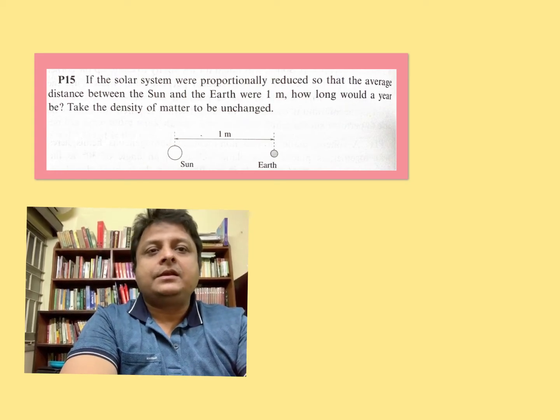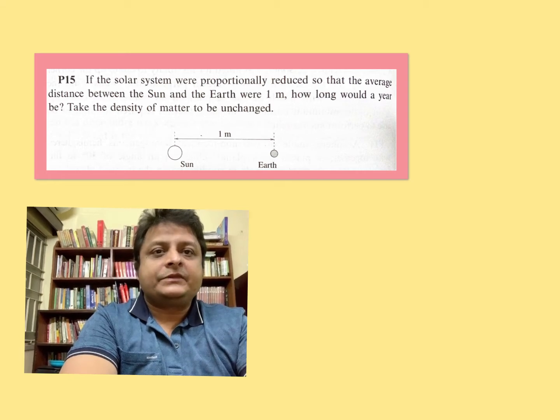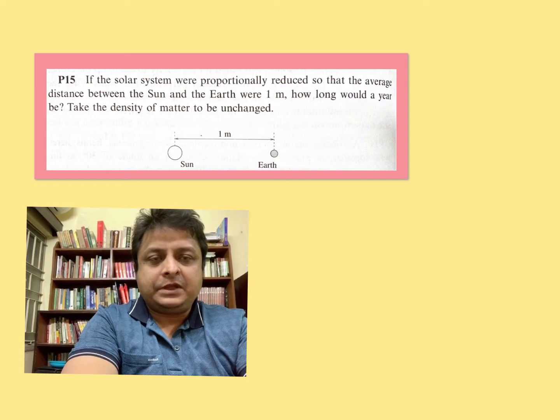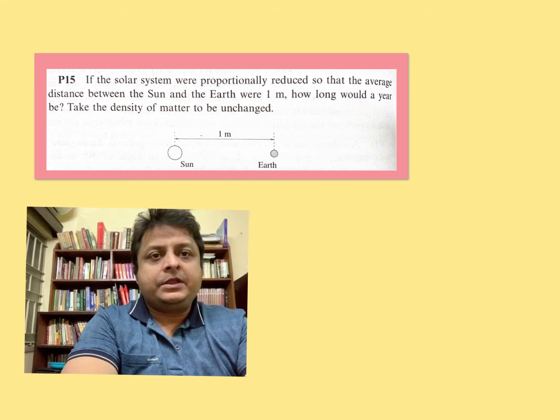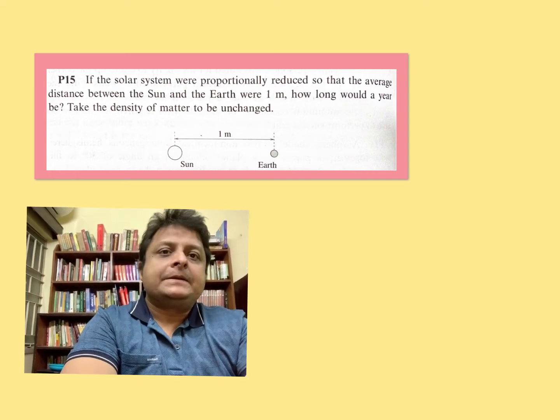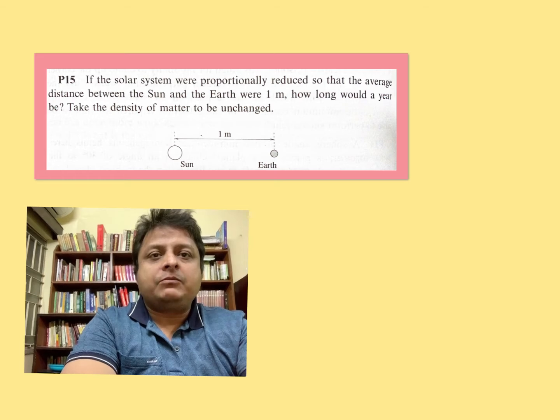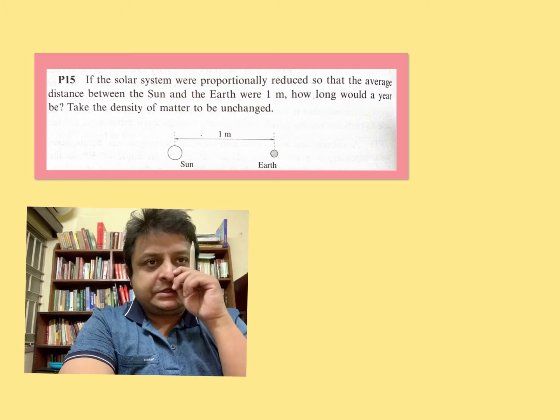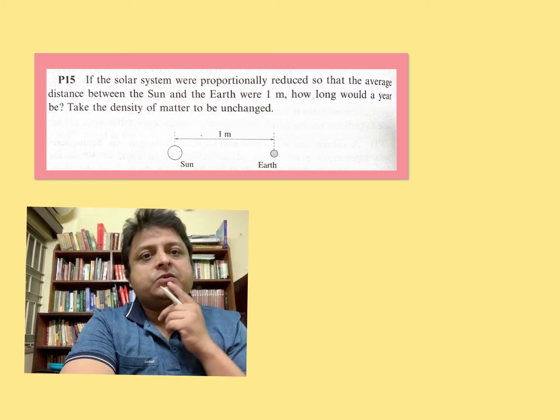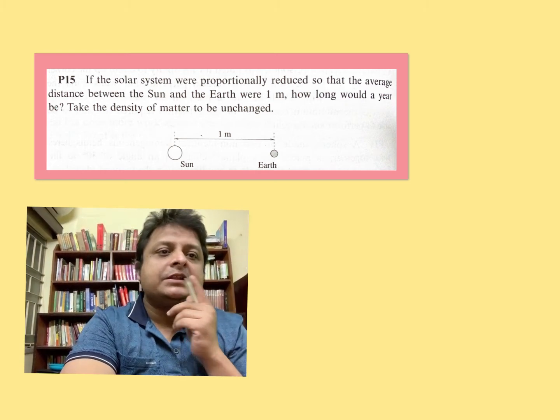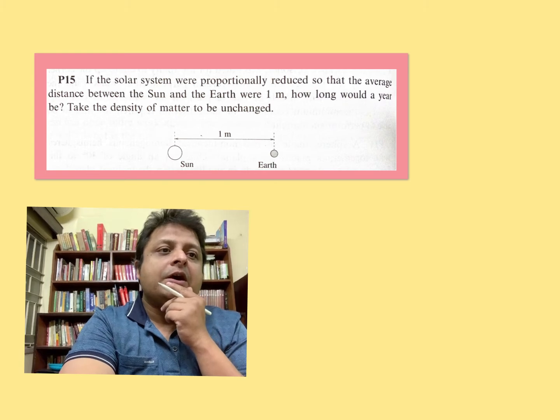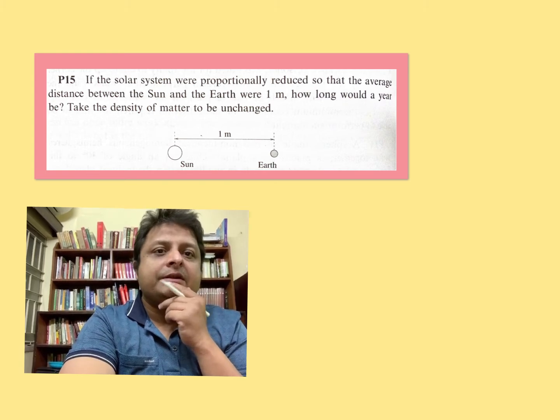Welcome my viewers again. This problem was actually requested by one viewer on my YouTube channel. This is a problem from the book '200 Puzzling Problems in Physics': If the solar system were proportionally reduced so that the average distance between the Sun and the Earth were one meter, how long would a year be? Take the density of matter to be unchanged.